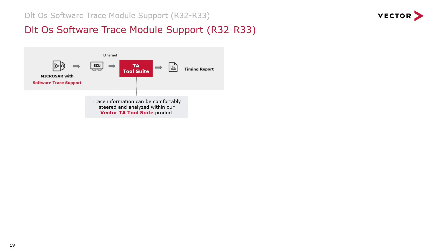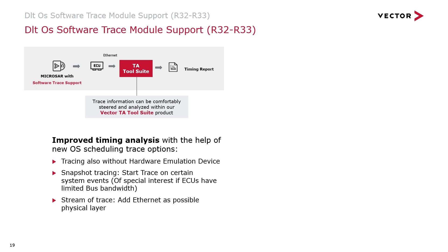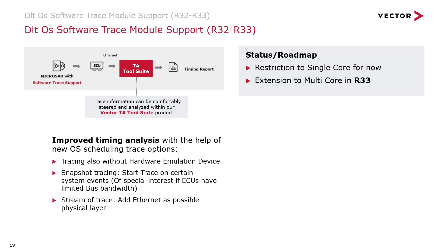The next highlight feature is an update of our DLT solution: OS Software Trace Module Support. On top of the existing tracing solution, we now have a functionality that allows you to directly connect the ECU to your PC via Ethernet and trace directly into the TA tool suite — without the need for any additional devices. If your system has limited bus bandwidth, use the newly introduced snapshot tracing and start tracing at a specific system event, collecting the tracing information only afterwards. The functionality will be extended to multi-core support with R33, which will allow tracing with higher bus loads — so this will be when the feature really comes into play.